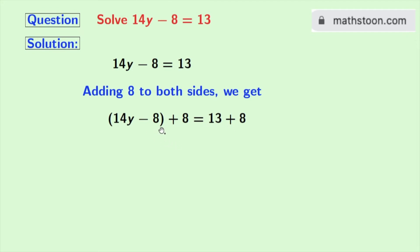Look, in the left hand side, we have minus 8 plus 8, which is 0. So we have 14y in the left hand side. And in the right hand side, after adding these two numbers, we get 21.